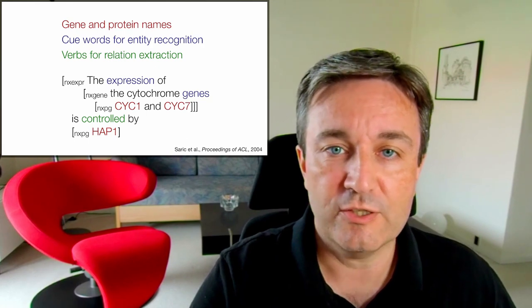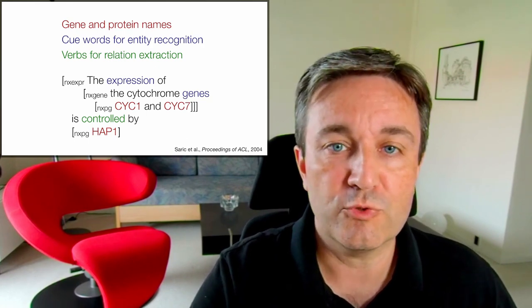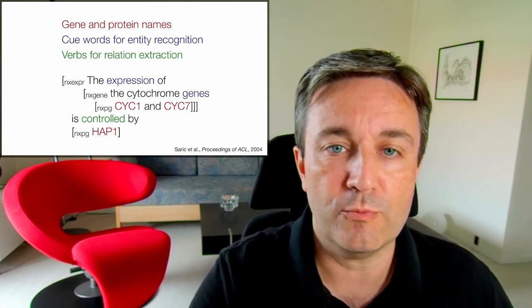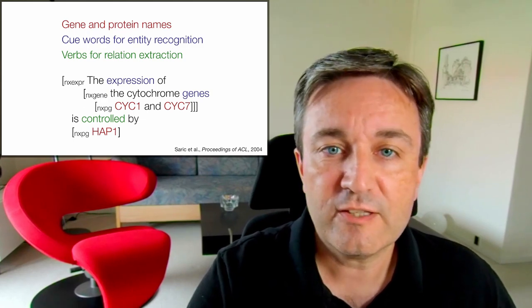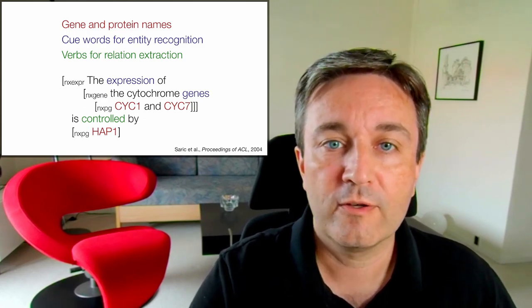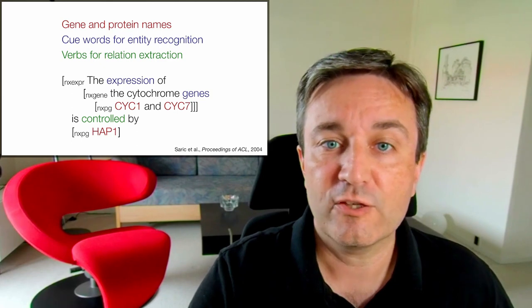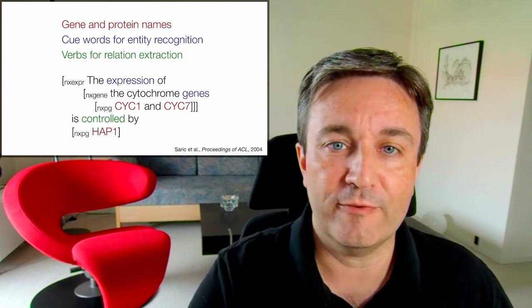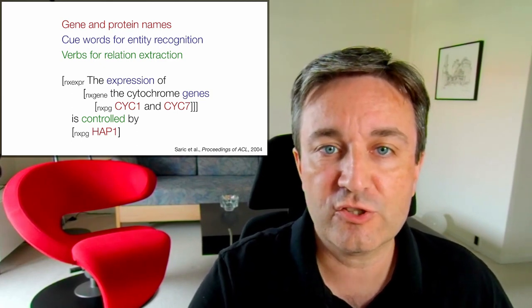If we look at an example sentence, the expression of the cytochrome genes SIG1 and SIG7 is controlled by HAP1. The sentence is passed into smaller fragments like SIG1 and SIG7. Then on top of that, the cytochrome genes SIG1 and SIG7.